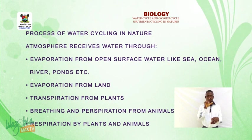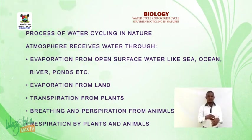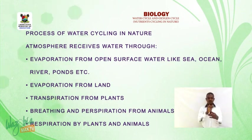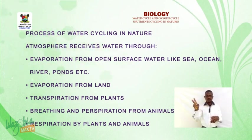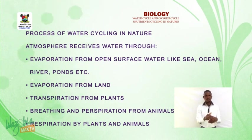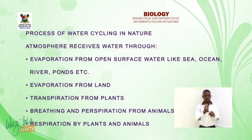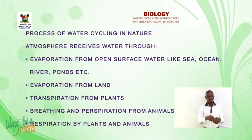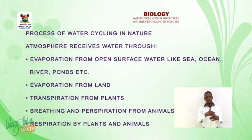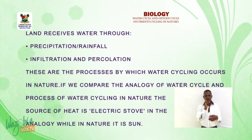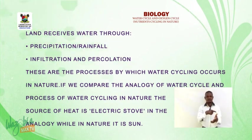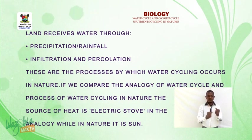Process of water cycling in nature: the atmosphere receives water through evaporation from open surface water such as seas, oceans, rivers, and ponds; evaporation from land; transpiration from plants; breathing and perspiration from animals; and respiration by plants and animals. Land also receives water through precipitation or rainfall, infiltration, and percolation. These are the processes by which water cycling occurs in nature.